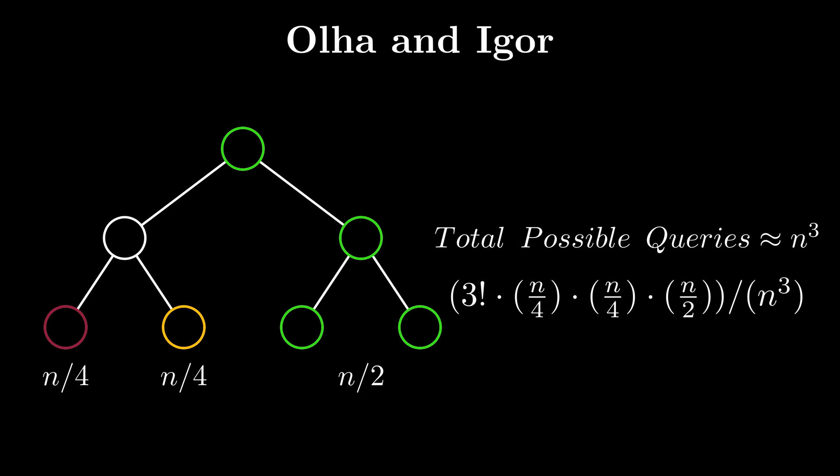So the total probability in this case is 3 factorial times n by 2 times n by 4 squared by n cubed. That's equal to 6n cubed by 32n cubed, and that's equal to 3 by 16.